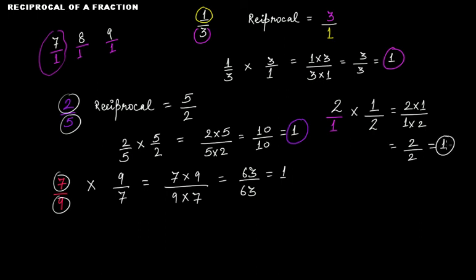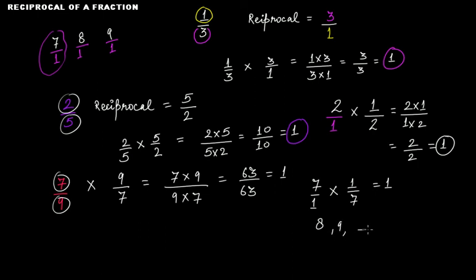Again we get 1 when you multiply a fraction with its reciprocal. The same applies for 7, 8, 9, or any number. For the reciprocal of 7, write it as 7 over 1, and the reciprocal is 1 over 7. Multiplying gives 1, and the same holds for 8, 9, or any number.